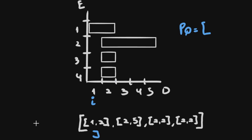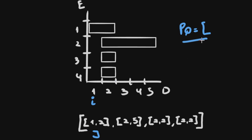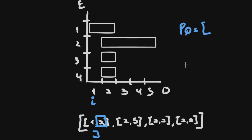The approach will be the following. We have events sorted by the first element, and we iterate every day from one up to the maximum day — five in this case. We have a pointer j for events, and a priority queue (min-heap) which is initially empty. On day one, we check if the current start day for the event at j equals the current day — one equals one.